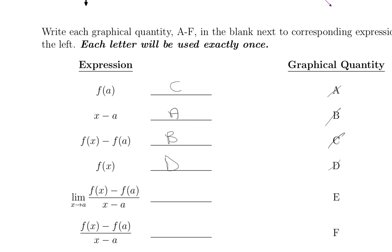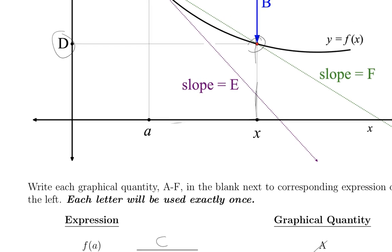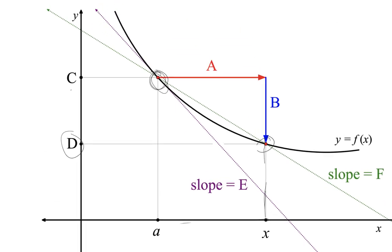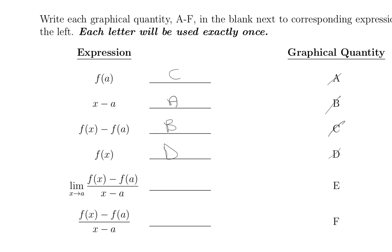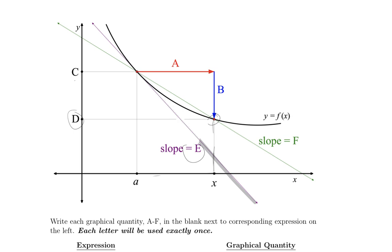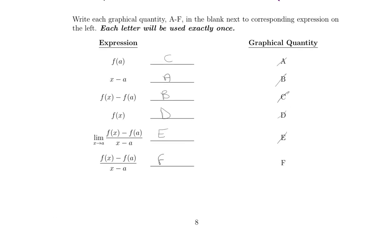Next, we're asked to find the limit as x approaches A of f of x minus f of a over x minus A, which is the instantaneous rate of change. Looking at point A, this line is our tangent, which means it has the same slope as the derivative there, and that slope is given by E. Lastly, f of x minus f of a over x minus A is the average rate of change over our interval — the line connecting those two points — and that average rate of change is F. That ends part two.